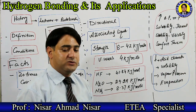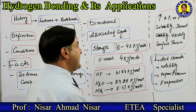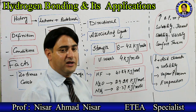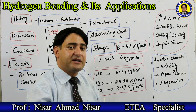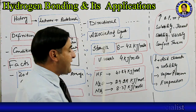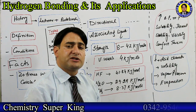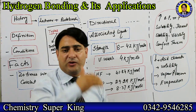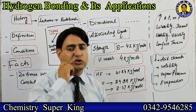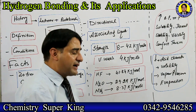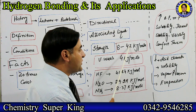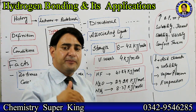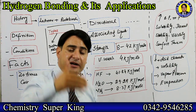Hydrogen bond is a directional bond. Remember, we represent hydrogen bond with a dotted line. Hydrogen bond is a directional bond — it forms in a specific direction. The energy required to break a hydrogen bond ranges from 8 to 42 kilojoules per mole, depending on which species and atoms the hydrogen bond is formed between.